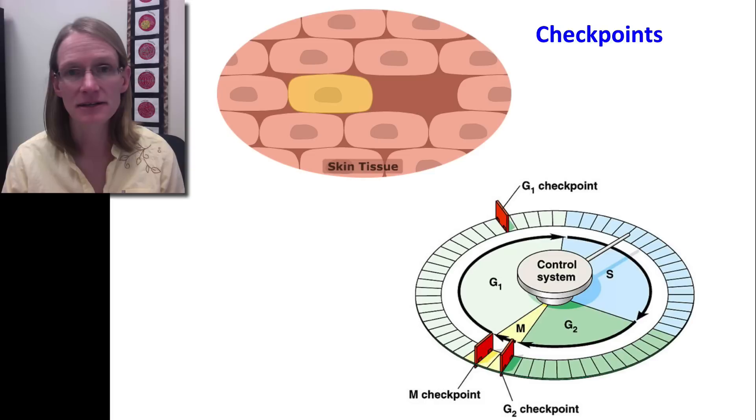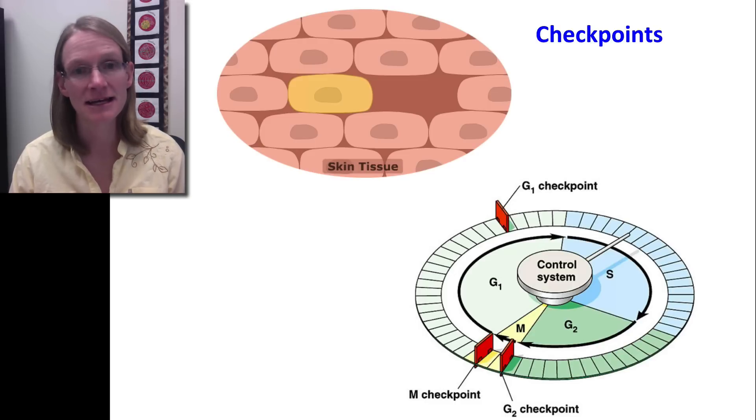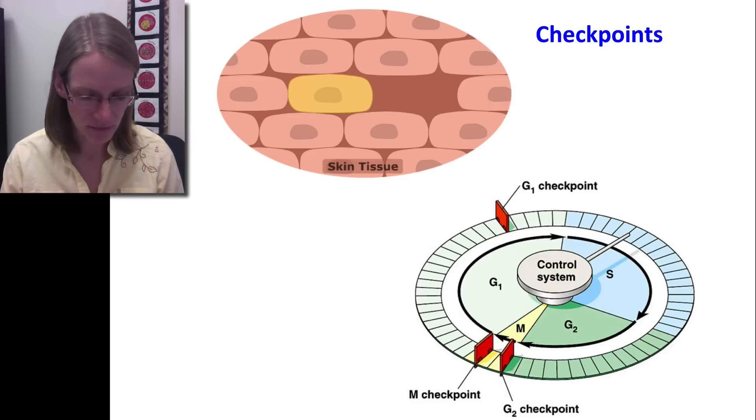We already outlined all these potential mistakes. But these checkpoints allow for a stop and re-gather ourselves and say, has everything gone all right? Because if it hasn't, then we can go ahead and fail this particular checkpoint, meaning that the cell is then signaled for death instead of continuing to keep making more and more of these improper cells.